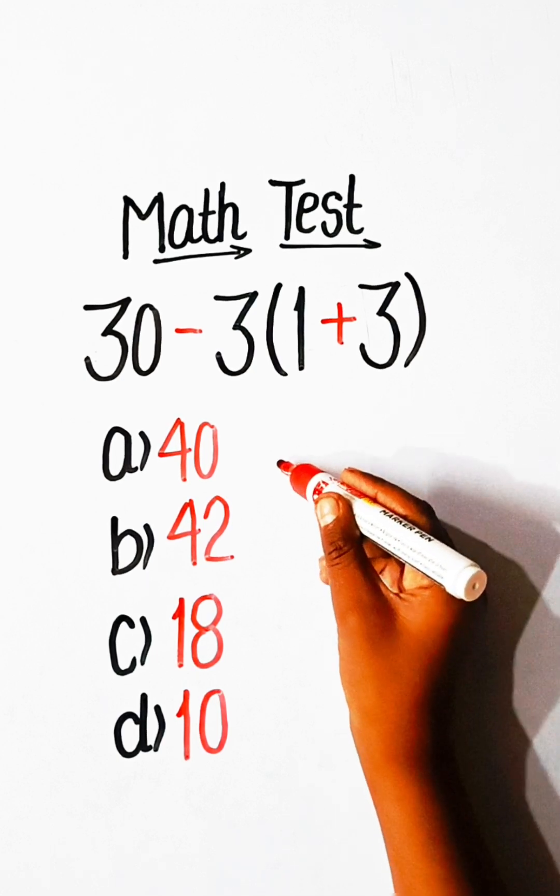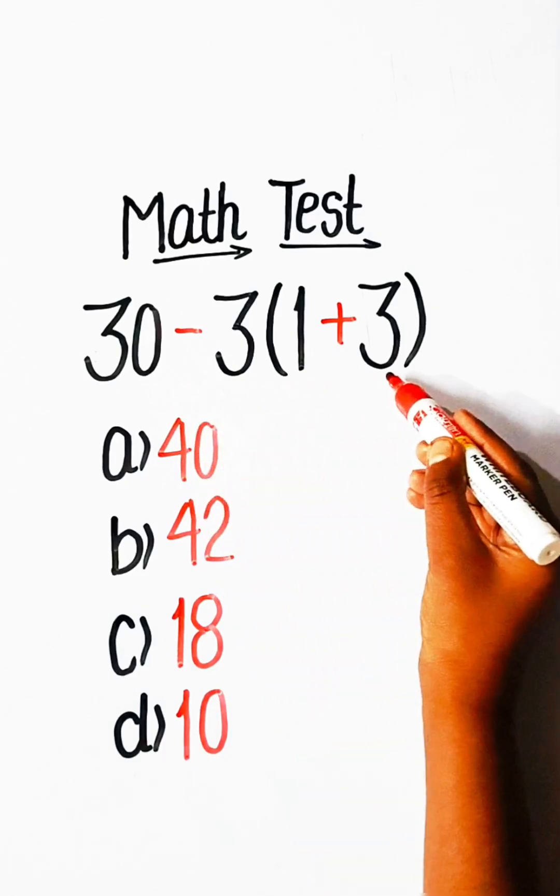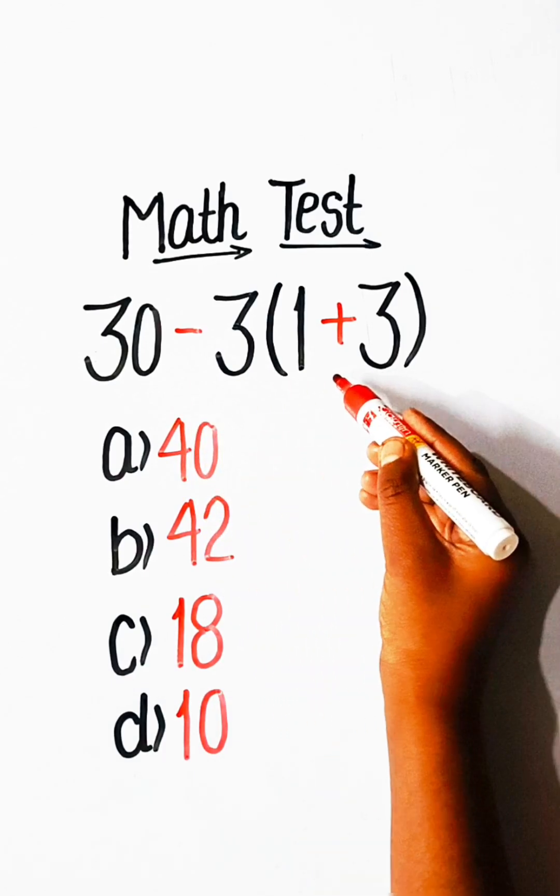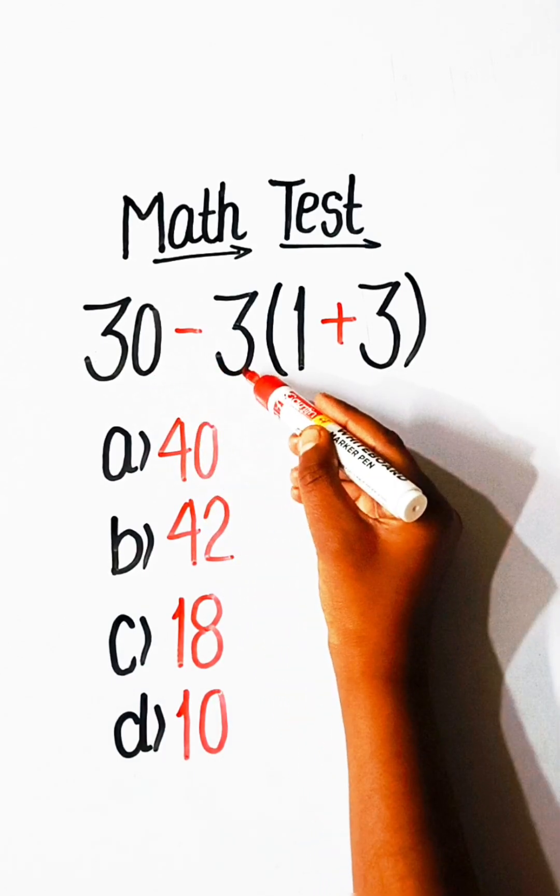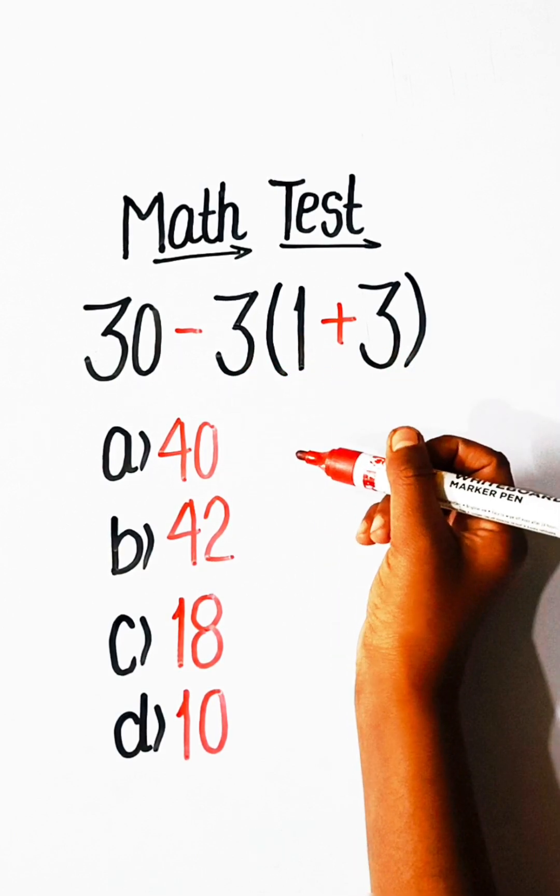Hello everyone, welcome back to my YouTube channel. In this video, we will solve this math expression. 30 minus 3 under bracket 1 plus 3 equals to what?